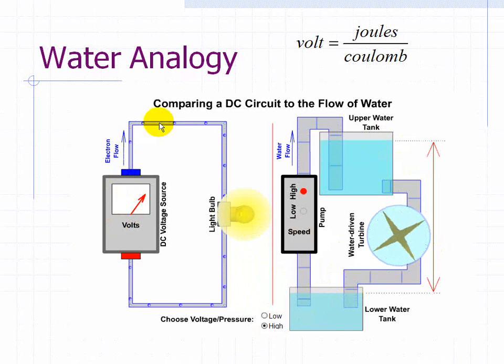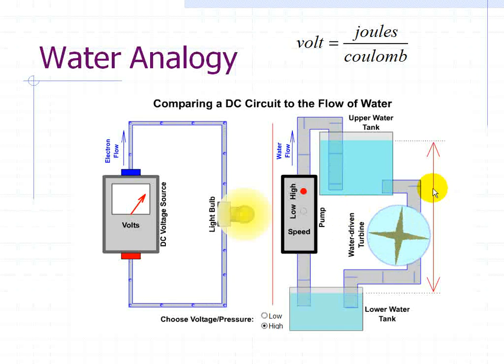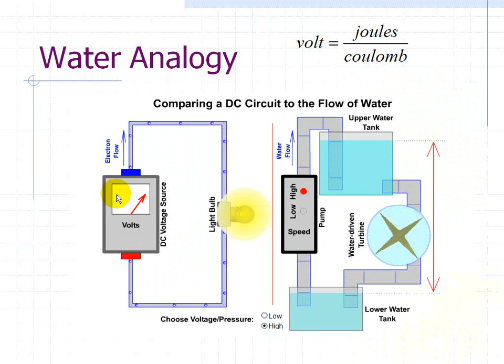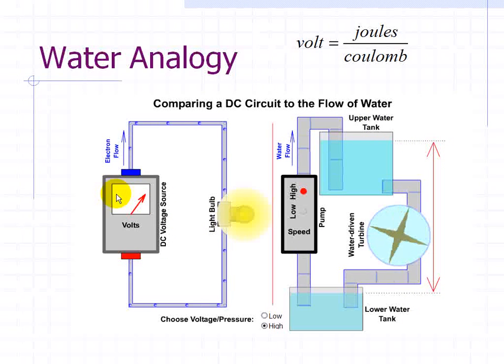We have an electron flow. There's a greater voltage difference which is analogous to the upper water tank when compared with the lower tank. A greater voltage difference implies a greater height distance with the water analogy. So the greater the difference, in this case for a DC voltage source the greater the voltage difference, then the greater the amount of work you can do.